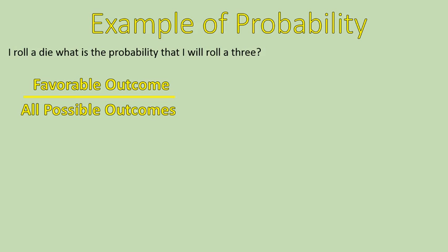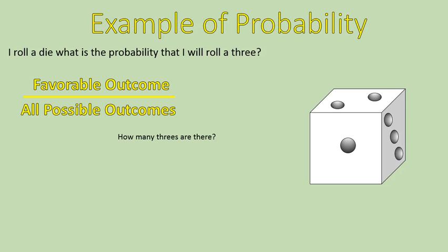Remembering that my favorable outcome divided by my total possible outcomes is the equation for probability, I just have to ask myself, how many 3's are there? It's sometimes nice to have a picture or to grab an actual die and take a look at it. How many 3's are there? Just one.